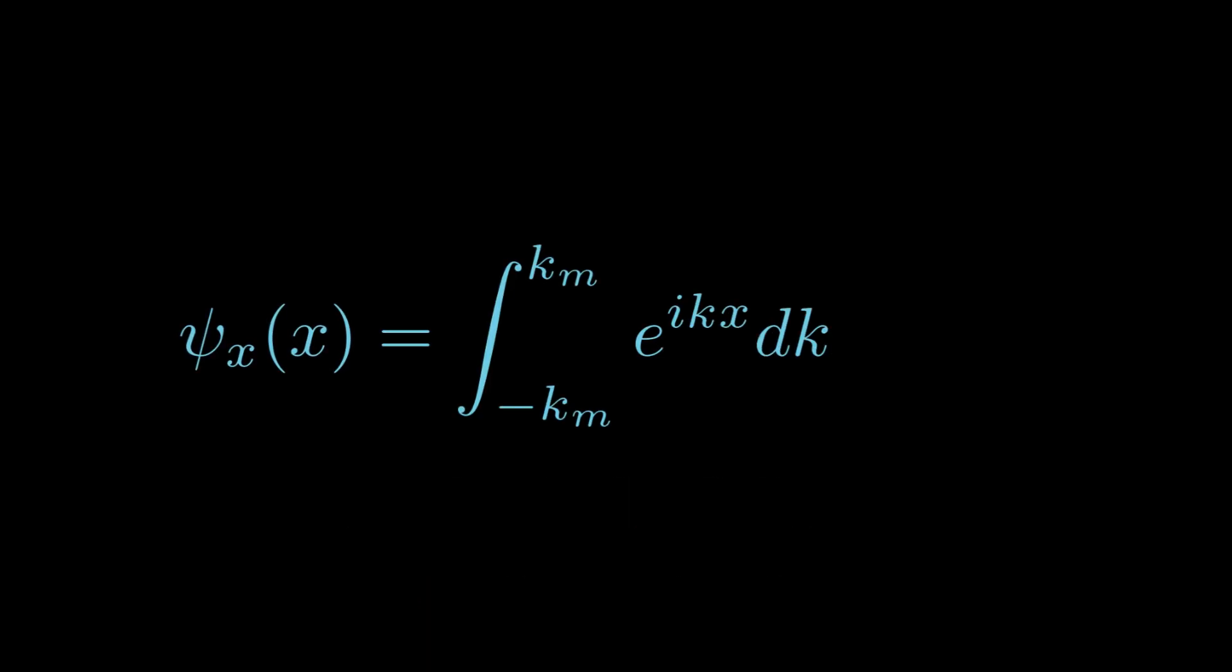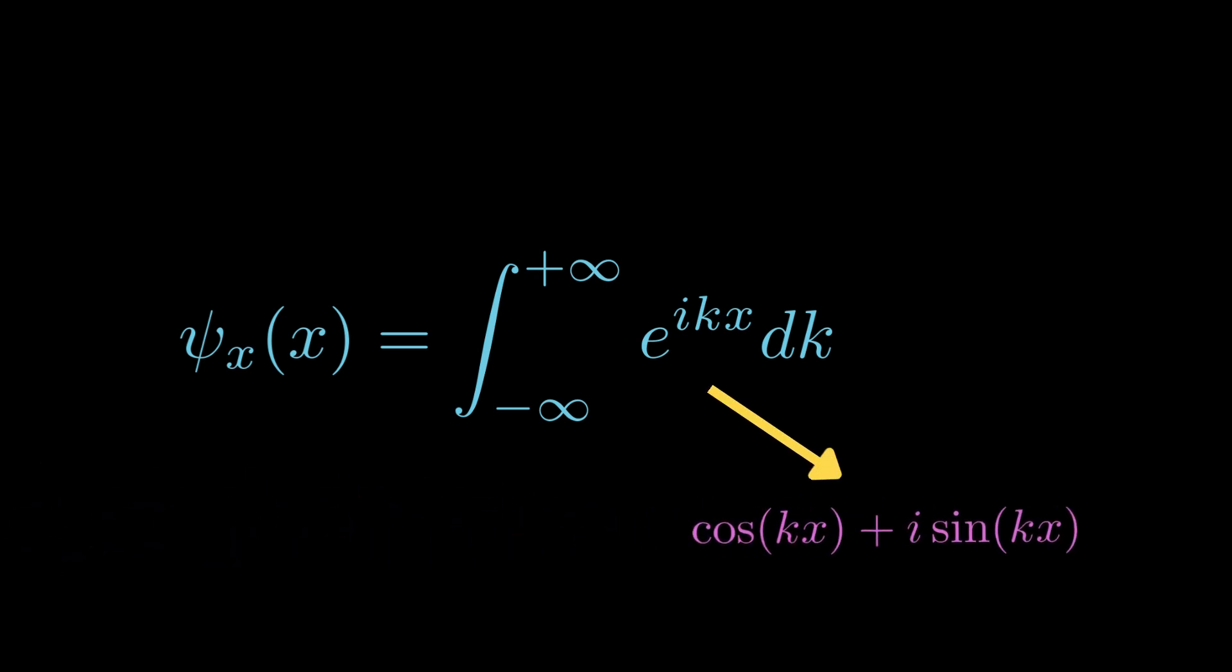But what if we calculated the integral over all the values of k, or the momentum values, from negative infinity to positive infinity? What do we know about this integration? The exponential function within the integral is an imaginary function whose real part is a cosine function. So at x equals zero, it equals to one.